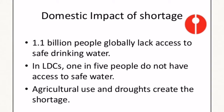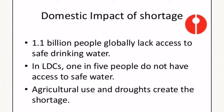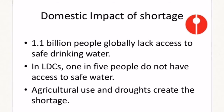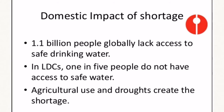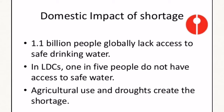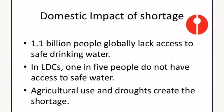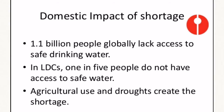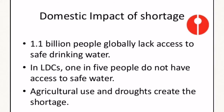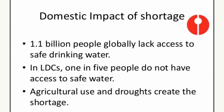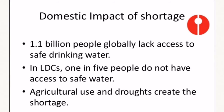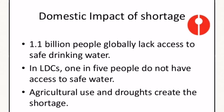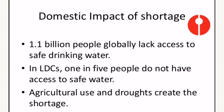Now, looking at the domestic impact of water shortage: 1.1 billion people globally do not have access to safe drinking water. This means they may have to go to a communal tap, and even the water obtained from that communal tap might not be safe for consumption. Although in Singapore we have water security and safe potable water piped into our homes and schools — water that is ready to drink straight from the tap — we are an anomaly in the world.